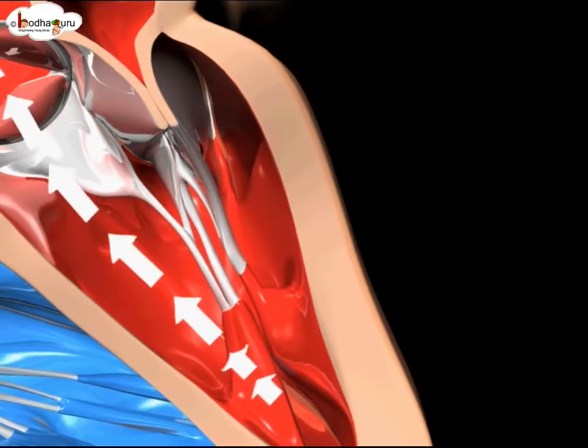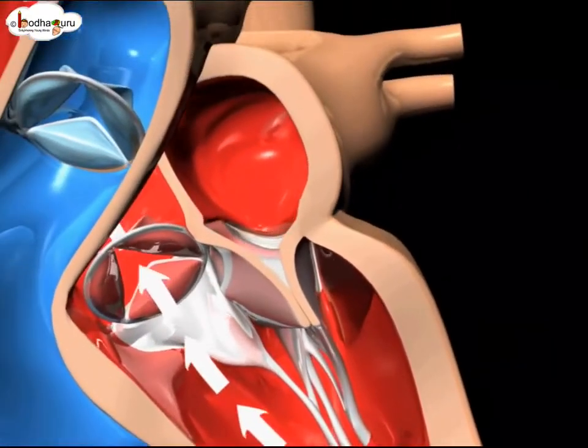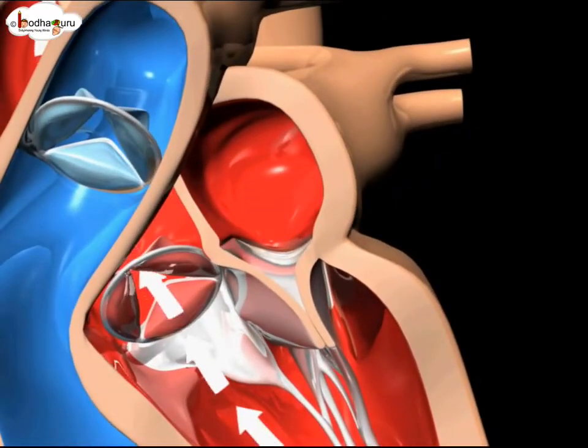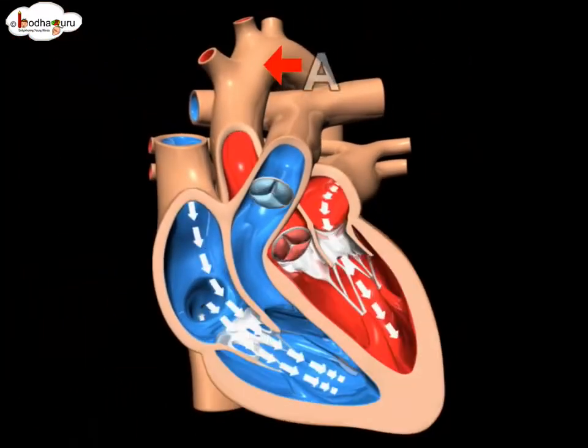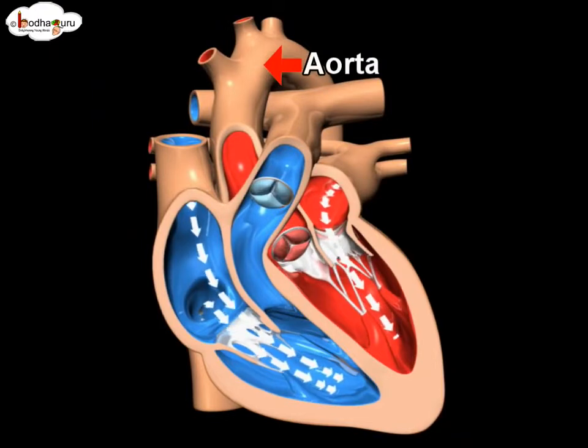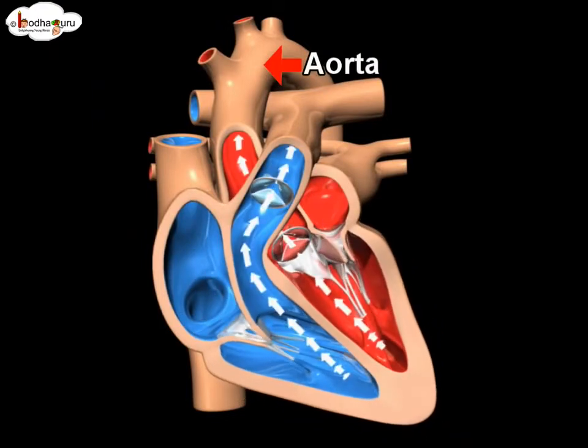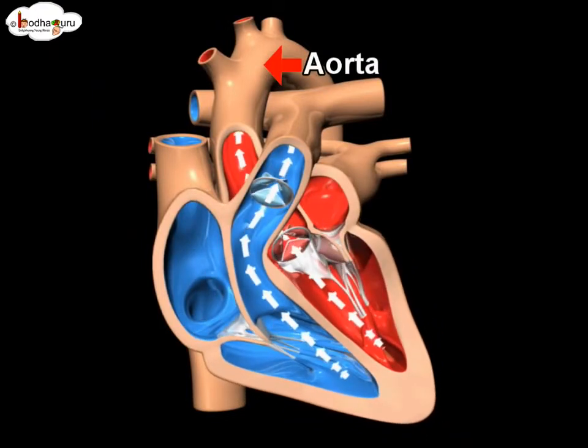Then it is pumped into the aorta, which is the source of many arteries that carry oxygenated blood to different parts of the body.